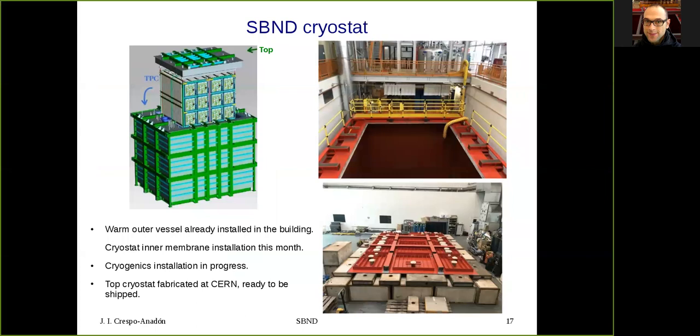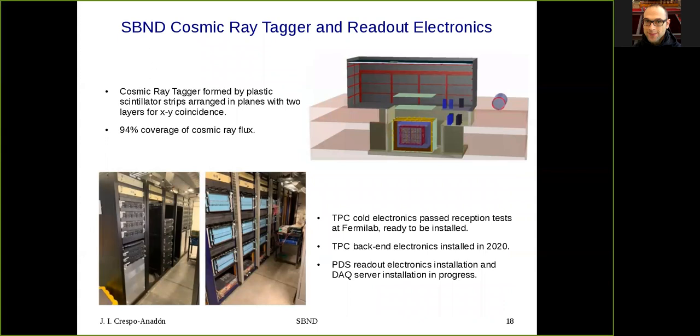Regarding the SBND cryostat, you can see here a picture of the warm outer vessel which is already installed in the building. And the cryostat inner membrane will begin this month. We have also in progress the cryogenics installation. And then we have the top of the cryostat which has been fabricated at CERN and is ready to be shipped. We also have a cosmic ray tagger which is formed by plastic scintillator strips arranged in planes with two layers for XY coordinates and which gives us a 94 percent coverage of the cosmic ray flux. We also have the TPC cold electronics at Fermilab. They have passed the reception test and they are ready to be installed. And we have the TPC backend electronics installed since 2020. The PDS readout electronics and the DAQ server are currently being installed.